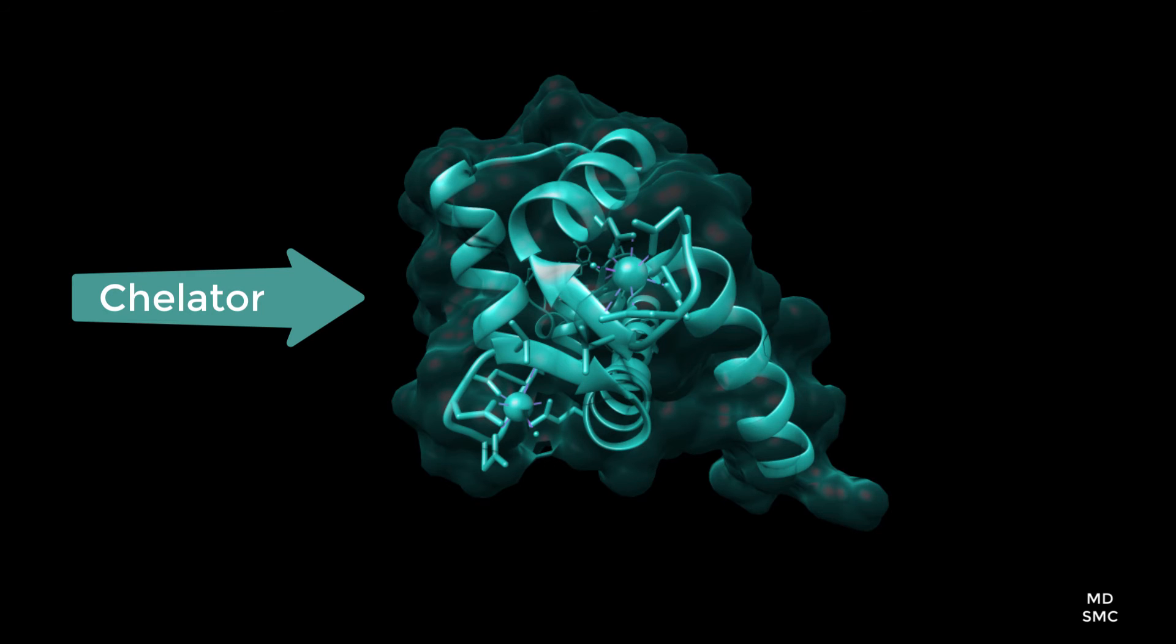A chelator is a term describing a ligand's ability to interact with more than one donor atom. This affinity for polydentate coordination indicates that the coordination bonds in the binding site are strong, offering a sort of scaffold support to the protein's form.